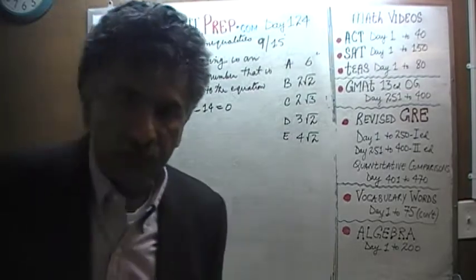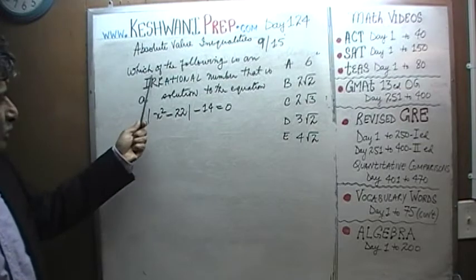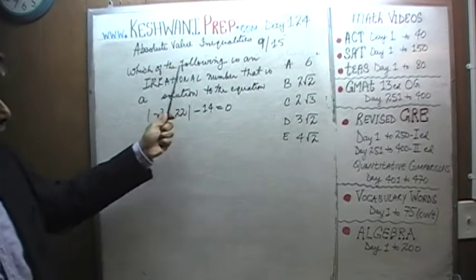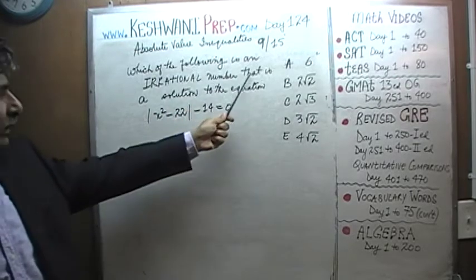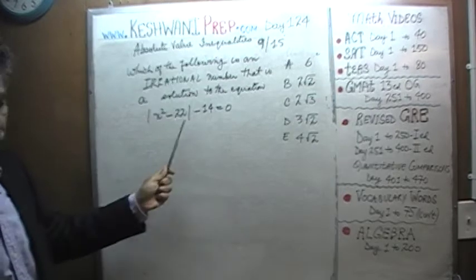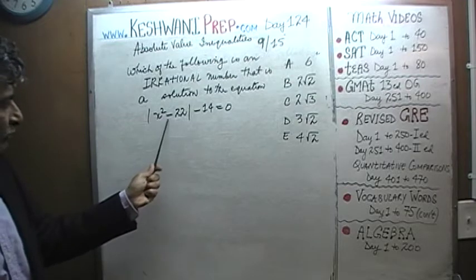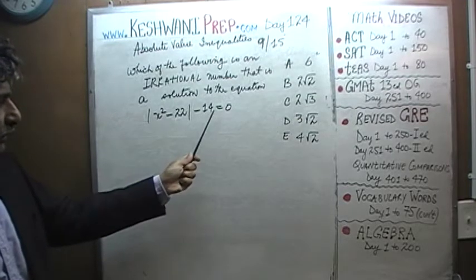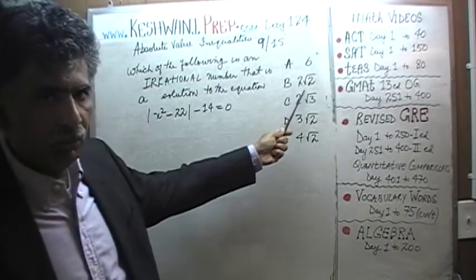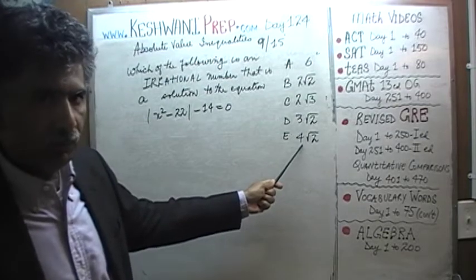Here is the problem — it's already on the blackboard. Which of the following is an irrational number that is a solution to the following equation: absolute value of x squared minus 22, minus 14, equals 0. The answer choices are: 6, 2 root 2, 2 root 3, 3 root 2, and 4 root 2.